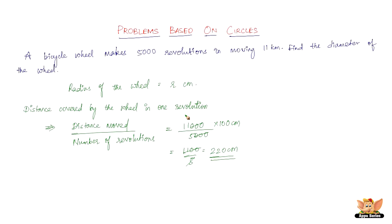The distance covered by the wheel in one revolution is equal to the circumference of the wheel. The circumference of the wheel is 2πr, taking r centimeters to be the radius of the wheel. This is equal to 220 centimeters, because that is the distance covered in one revolution, which equals the circumference.